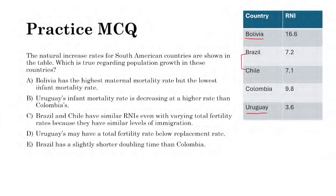Answer choice A — Bolivia has the highest maternal mortality rate but the lowest infant mortality rate — is wrong. Bolivia has the highest RNI, so it typically has high maternal AND high infant mortality rates, not the lowest. When there are high infant mortality rates, there are also high maternal mortality rates; low maternal mortality rates correspond with low infant mortality rates.